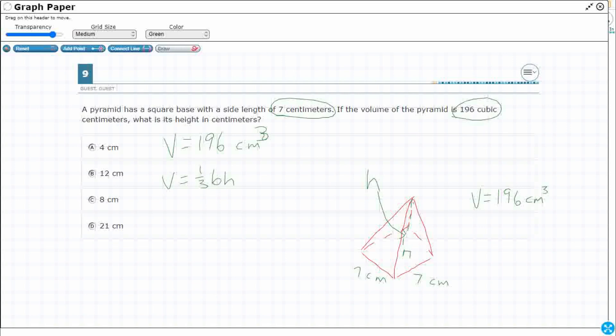Well, if volume equals 196, and volume also equals one-third base times height, I'm just going to substitute in this for this, I'm going to say 196 cubic centimeters equals one-third base times height. All right. So what can I do first?